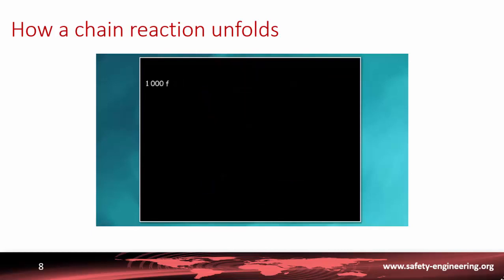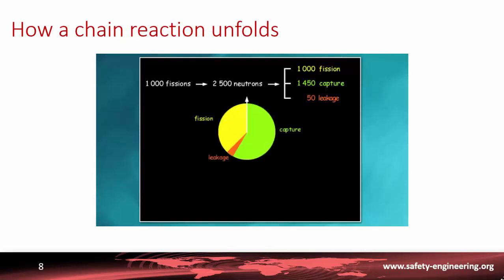If, at a given moment in time, a thousand fissions occur in the reactor core, this results in the emission of 2,500 neutrons. After a certain number of collisions, these neutrons can disappear in three ways: fission, capture by different nuclei, or escape from the reactor — referred to as leakage. Appropriate arrangements are made to obtain exactly 1,000 fissions when the fission rate is maintained at constant power, around 1,450 captures, and 50 escapes. This is the relative proportion of fission, capture, and leakage if the chain reaction is to be exactly self-maintaining.